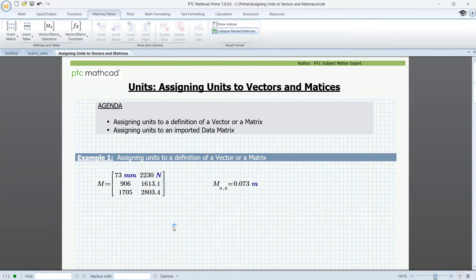If it is a large matrix, and if all elements in the first column should have the unit millimeters, and in the second column, newtons, it may take some time to assign units to all elements. Instead, we could define the two columns as vectors, assign the units, and then define the matrix M. Let's see how.